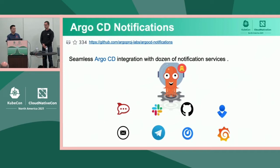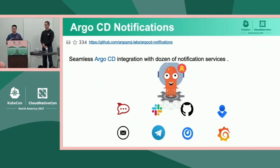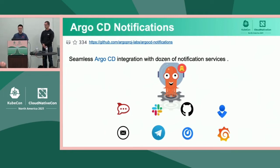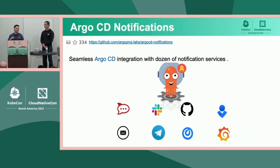Notifications is a project that allows you to be notified about state changes of your applications. For example, you can get a Slack, email, or PagerDuty notification any time one of your applications degrades, has configuration drift, or every time someone clicks the sync button. We also have a deep dive on this service tomorrow that Alex will be talking about. This project is useful not just for Argo resources — you can incorporate it into other custom resources as well.